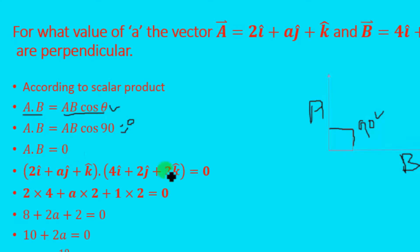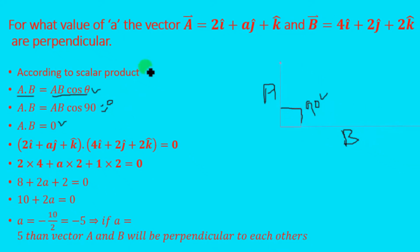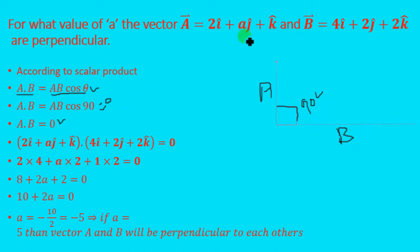So we have a dot b is equal to 0. For these two vectors to be perpendicular to each other, the dot product between them must be equal to 0. Now let's determine the dot product between vector a and vector b to find the value of a.